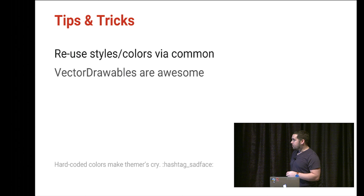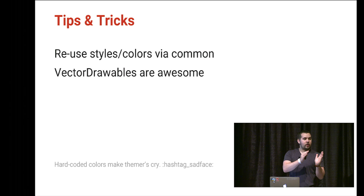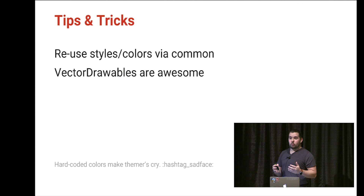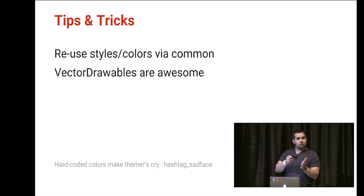Vector drawables, recently introduced with Lollipop API 21, are fantastic. If you're not familiar with how Android handles different resolutions, it creates buckets like drawable-hdpi or drawable-xxhdpi. Vector drawables let you create a single image placed in the drawable folder that scales up and down based on resolution, allowing you to create only one drawable that looks pixel-perfect on every device — otherwise you'd have to make separate versions for each resolution.